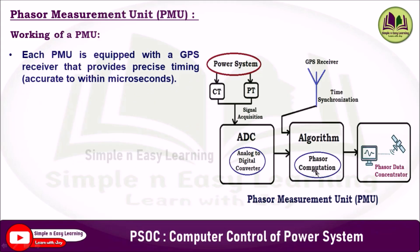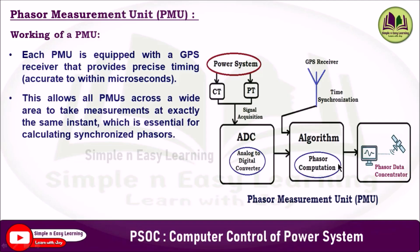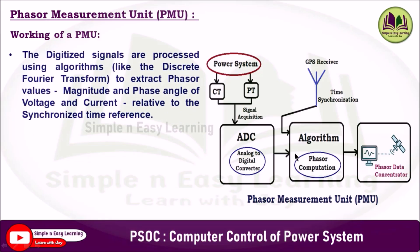Each phasor measurement unit is equipped with a GPS receiver that provides precise timing accurate to within microseconds. This allows all phasor measurement units across a wide area to take measurements at exactly the same instant, which is essential for calculating synchronized phasors. The digitized signals are processed using algorithms such as the Discrete Fourier Transform, Kalman filter method, matrix pencil method, and least squares method — which is also used in state estimation — to extract phasor values like magnitude and phase angle of voltage and current relative to the synchronized time reference.